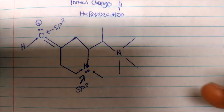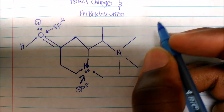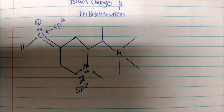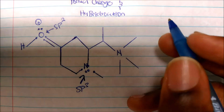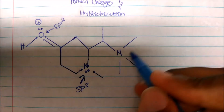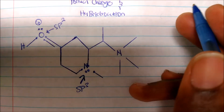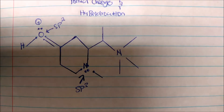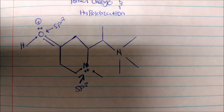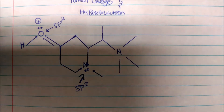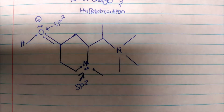Let's look at this other nitrogen over here. What's its hybridization? What's the steric number? The steric number in this case is four: one, two, three, four. In other words, you have four electron groups around the atom. An electron group can be a sigma bond, a pi bond, a single bond, a triple bond, a lone pair, or a double bond — they all count as one electron group.